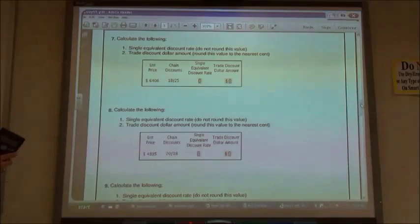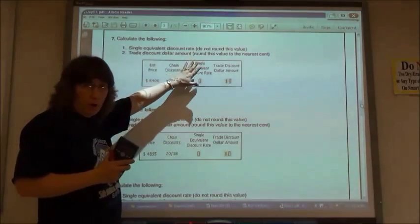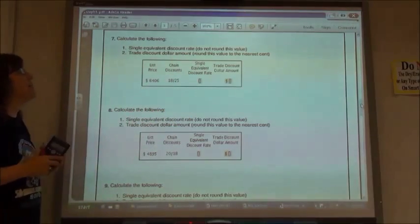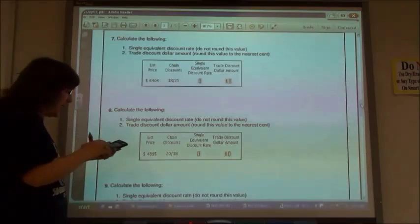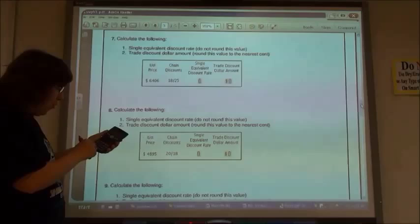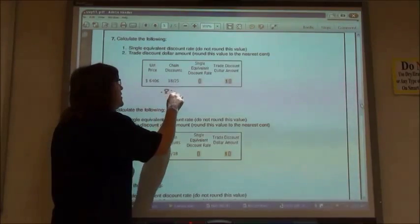We're going to start this out sort of the same way. What we have to do is find the net equivalent rate first, and then we're going to subtract that from 1 in order to find the discount equivalent rate. So for my chain discount here, if I have an 18% discount, 100 minus 18 gives me 82% for the net.